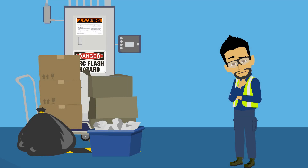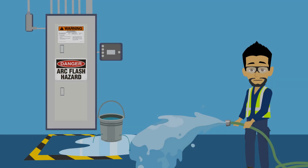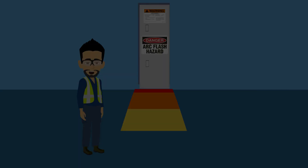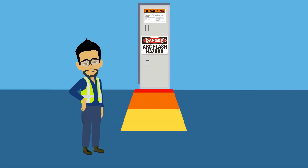The most common hazards are obstructed electrical panels and water or liquids stored near electricity. Arc flashes are best prevented by establishing and maintaining safe boundaries around high voltage equipment, consisting of three zones where distance and PPE are determined by the voltage in use.